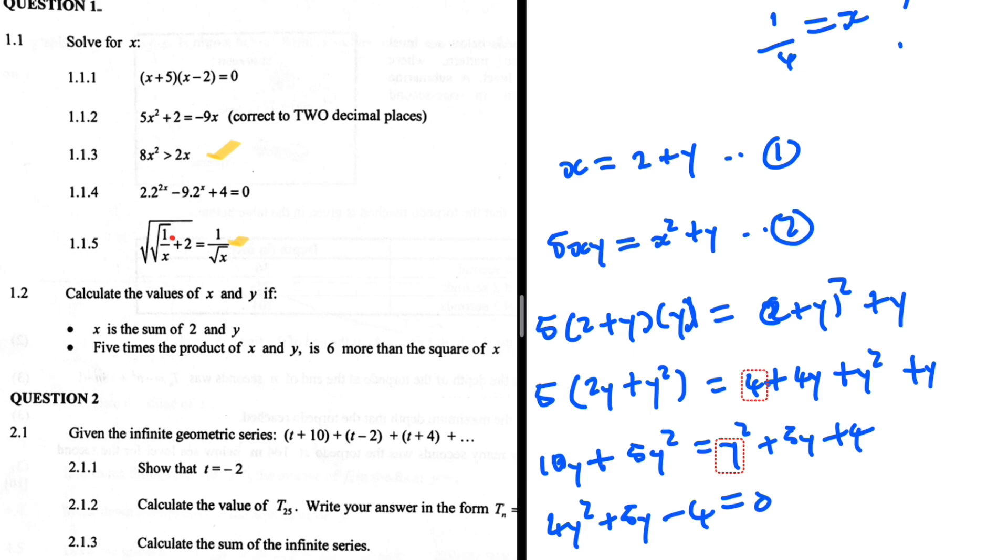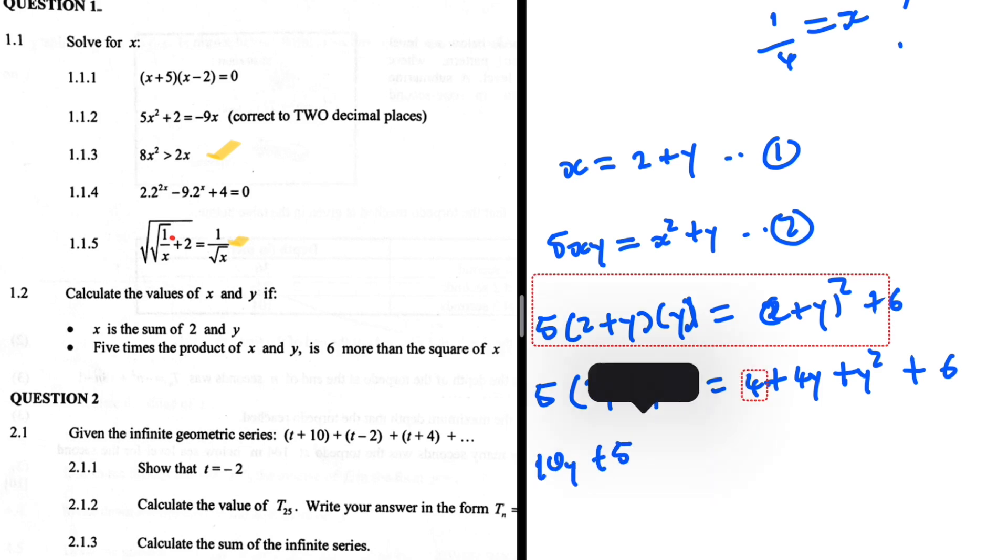Let's check: 5 multiplied by 2y is 10y, 5 multiplied by y squared is 5y squared. Then 2 multiplied by 2 is 4, plus 4y plus y squared plus... you see I've made a mistake. I've written y and that is supposed to be 6 actually. So that's 10y plus 5y squared equals 4 plus 6, which gives us 10, so this equals y squared plus 4y plus 10. Easy to make a mistake.